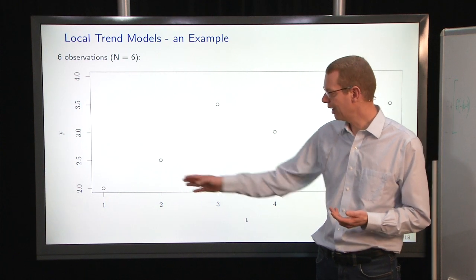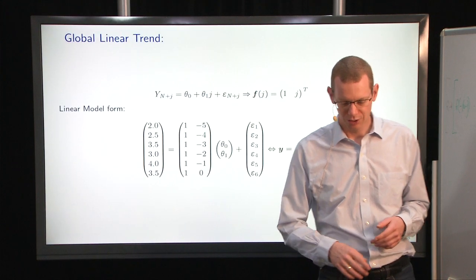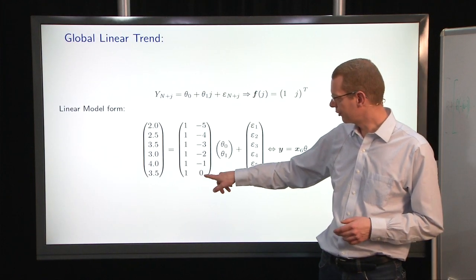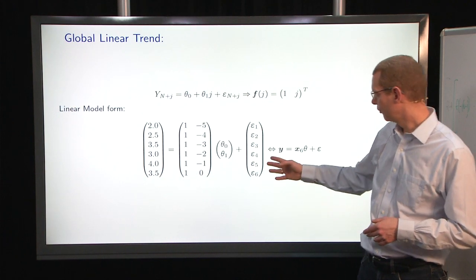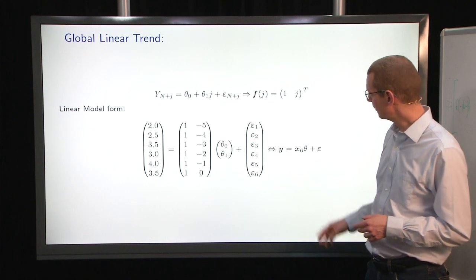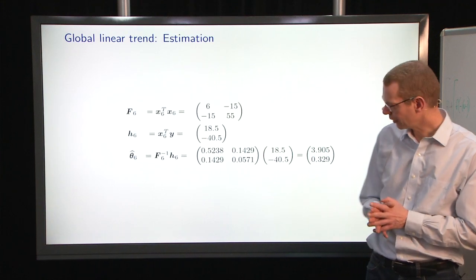A quick example. We have, in this case, six observations, and we want to look at what we have. We have the time points relative to the current time, we have the observations, and we want to estimate the parameters here. We have x6 here giving that.